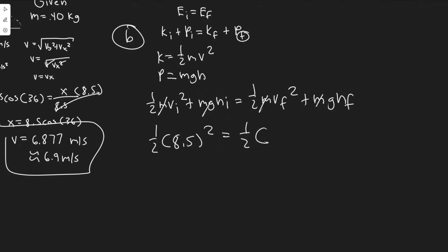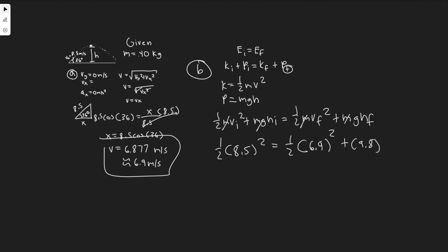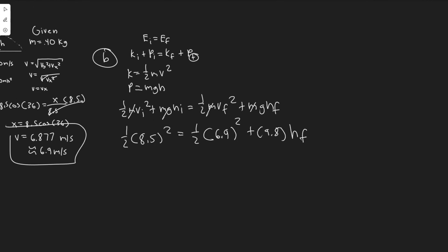We have one half v_final - we know what the final velocity is, it is 6.9 squared - plus g which is the constant 9.8, the acceleration due to gravity, and then h_final is what we're solving for. We're trying to find how high it goes. This is our equation. So I'm just going to do 8.5 squared divided by 2 which is 36.125 equals 6.9 squared divided by 2 which is 23.805 plus 9.8 h_f.